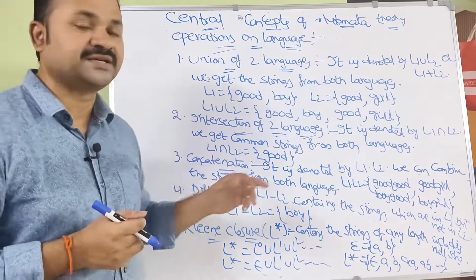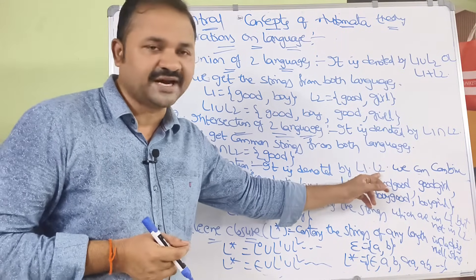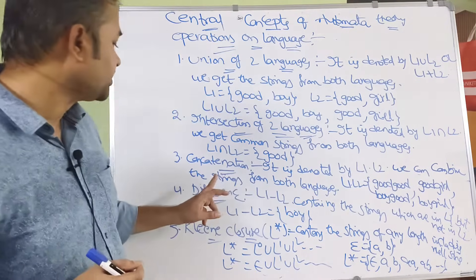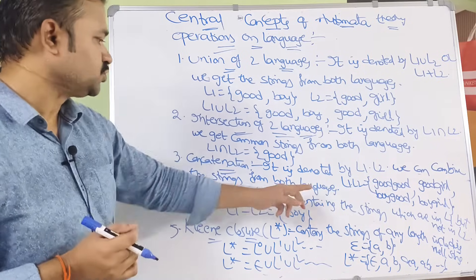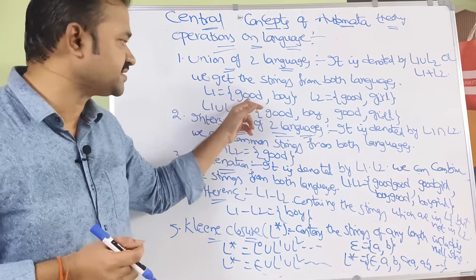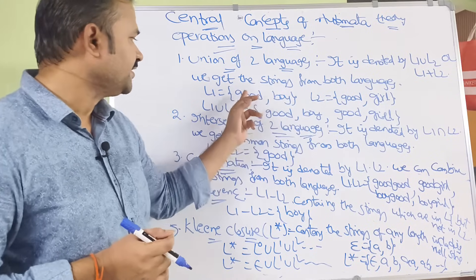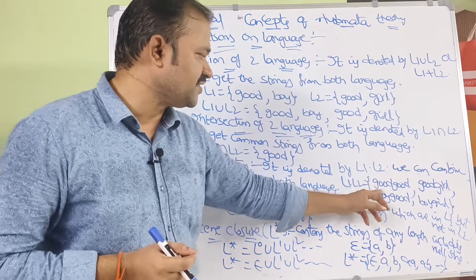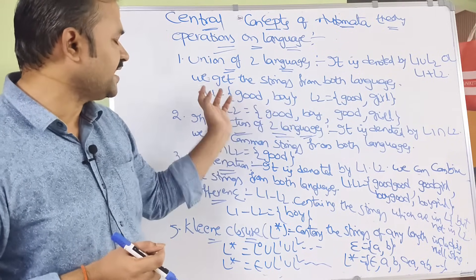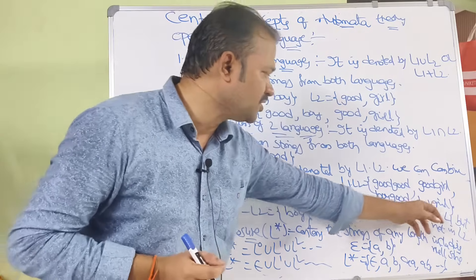Third operation is concatenation of two languages, denoted by L1 · L2. Concatenation means joining or appending — we combine strings from both languages. So L1 · L2: take the first string from L1 ('good') and combine with each string in L2 to get 'goodgood' and 'goodgirl'; then take 'boy' from L1 and combine to get 'boycgood' and 'boycgirl'.